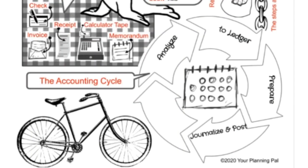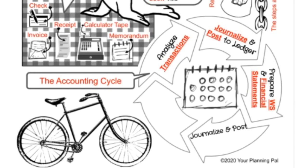Speaking of the accounting cycle, the first thing we do is analyze transactions — we use those source documents to start. After that, we journalize and post to the ledger, and that continues that paper trail.